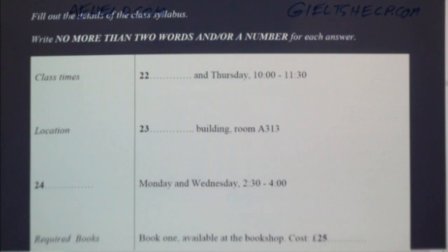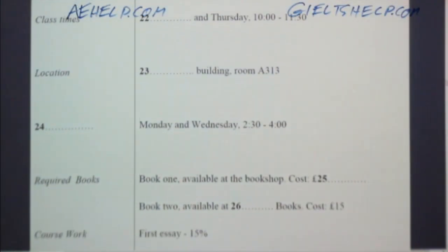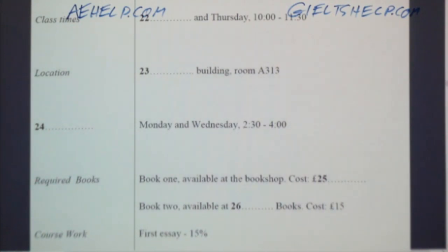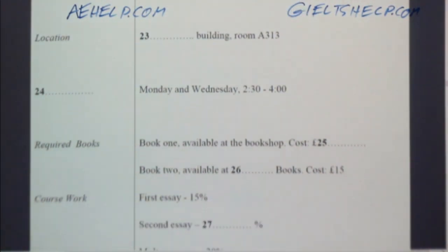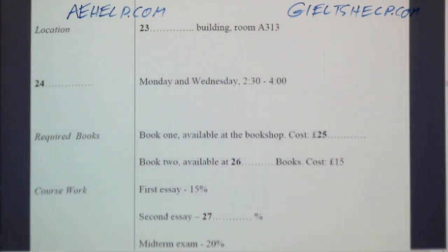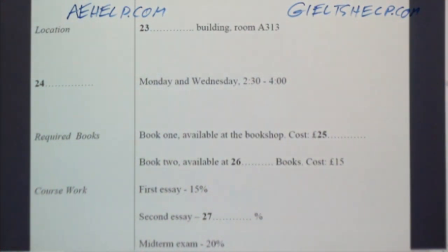Here you go. As you see, the class meets each Monday and Thursday from 10 to 11.30 in room A313 of the Juliet building. Do you know where that is? Yes, the Juliet building is right next to the Student Union building, correct? Yes, that's right. So next are my office hours. I hold them each Monday and Wednesday from 2.30 to 4 in the afternoon. If these do not work for you, feel free to send me an email, and we can make arrangements to meet at another time.